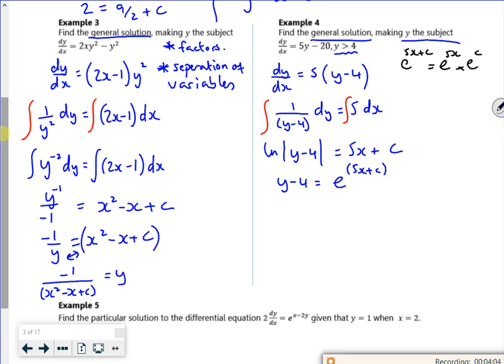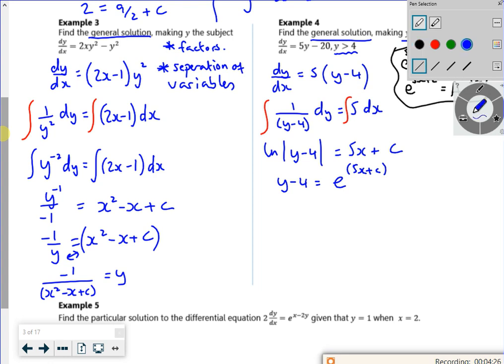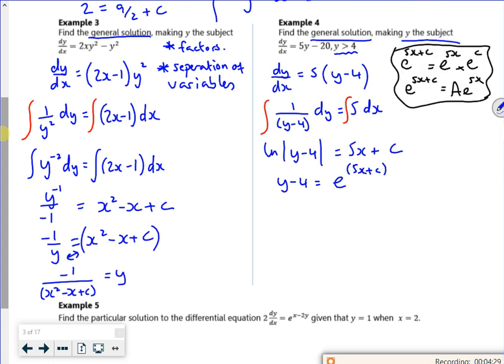Now e is a number, raised to the power of c, which is a number. So I'm going to call it a letter. I'm going to call it a because it's a constant. And we do this later on a lot more. So I just feel a little bit alien for you at the moment. But that's what I'm doing. I'm saying that the c's are constant, the e's are constant. So they're both constants, so I'm going to call it a constant. So y minus 4 is a e to the 5x. So y is a e to the 5x plus 4.